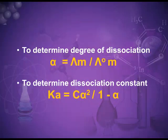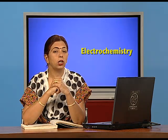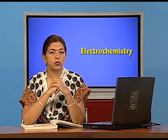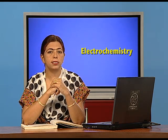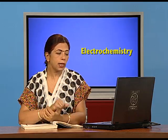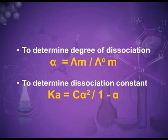Using Kohlrausch's law, we can also find out the degree of dissociation, alpha, which is mathematically equal to lambda m upon lambda m infinity. We can also find out the dissociation constant k, where k equals c·alpha squared upon (1 minus alpha), and alpha is the degree of dissociation.